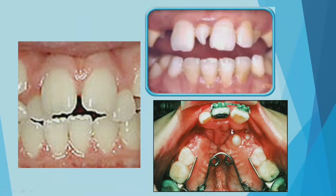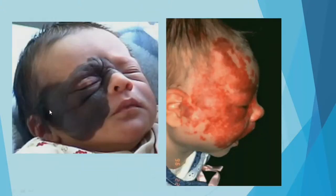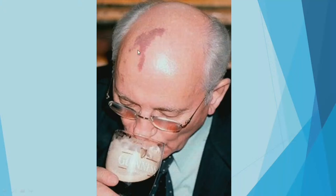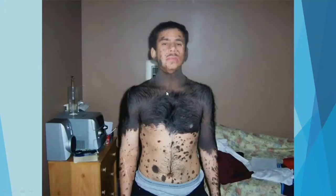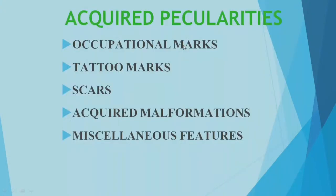Occupational features also help in identification. For example, a goldsmith who holds a pipe to blow fire flame develops peculiar changes in the teeth. Gutka chewers and regular tobacco users also show characteristic features. Dental implants can also help in identification. Birthmarks, hemangiomas, eye and pupil color, hair color, and hairy moles are additional acquired features useful for identification.